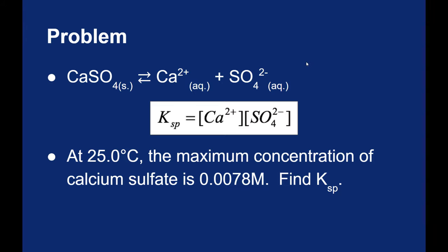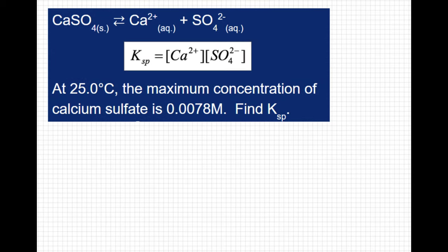As you look at the equilibrium, CaSO4 breaking down to get Ca2+ and SO42-. We are told the maximum concentration of the calcium sulfate is 0.0078 molar.